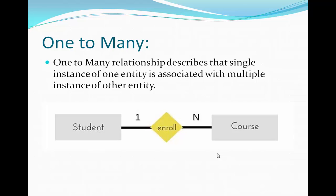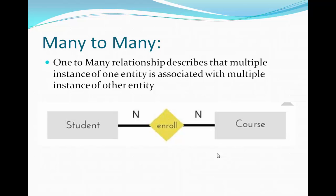Another example: one teacher teaches many students. This is a one-to-many relationship, where one teacher can teach more than one student. One instance of one entity is related to multiple instances of another entity — this is a one-to-many relationship.